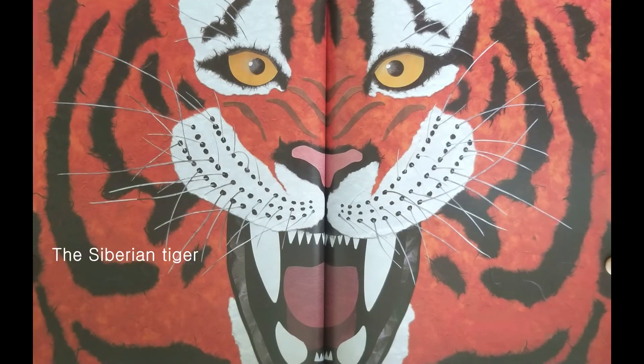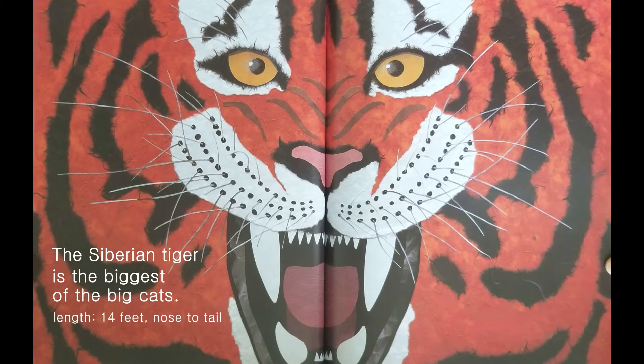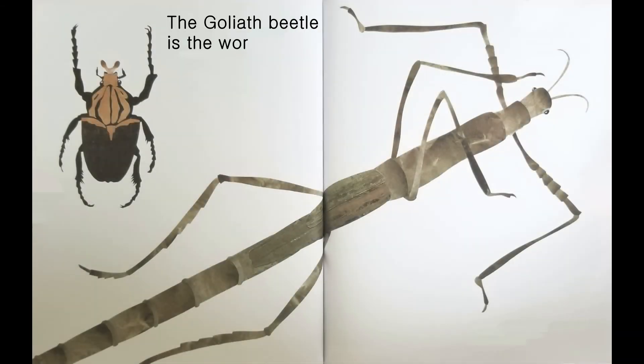The Siberian tiger is the biggest of the big cats. Length 14 feet nose to tail. Weight 500 to 700 pounds.